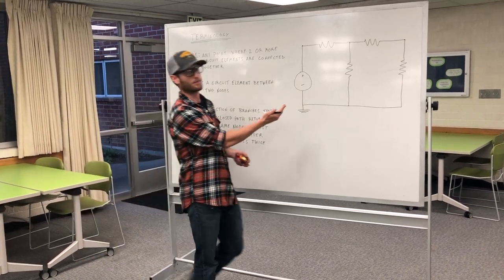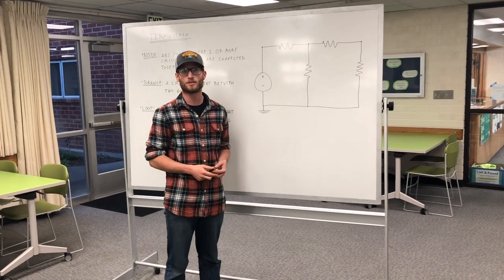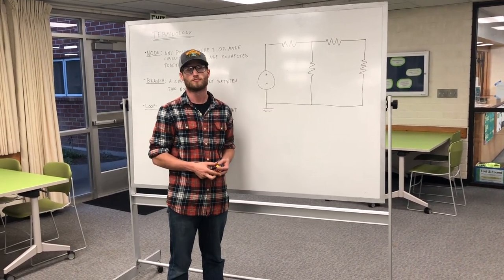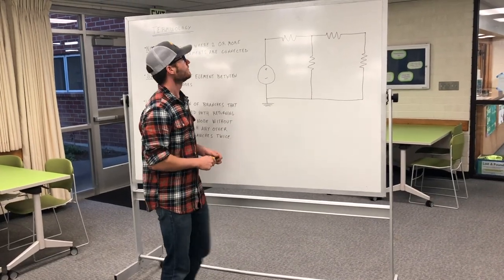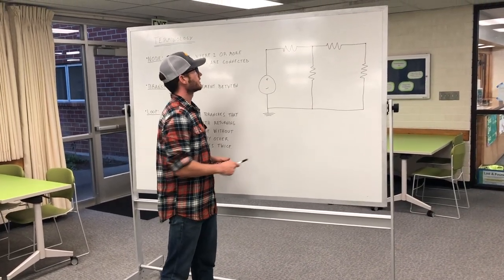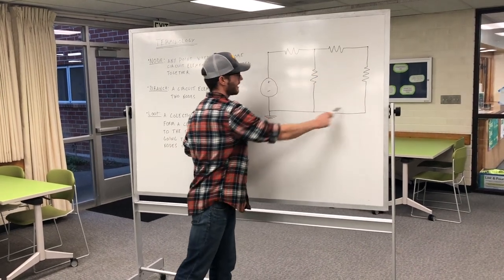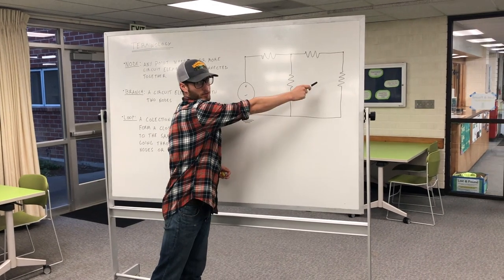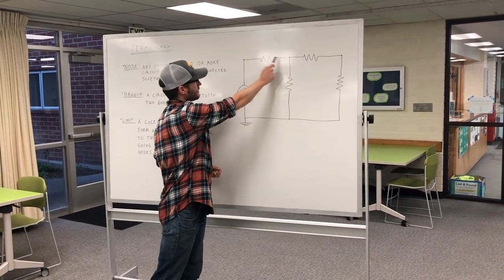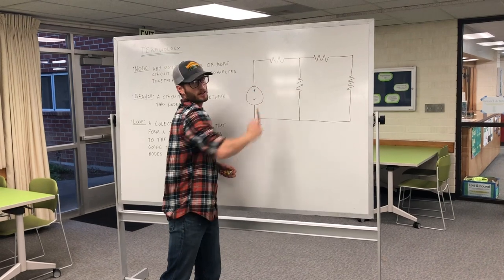Now, let's take a look at this example. Can anyone tell me how many nodes are on this example? There are four nodes on this example, here, here, here, and here. This node is connected to one, two, three circuit elements, as is this node, while these two nodes are only connected to two circuit elements.